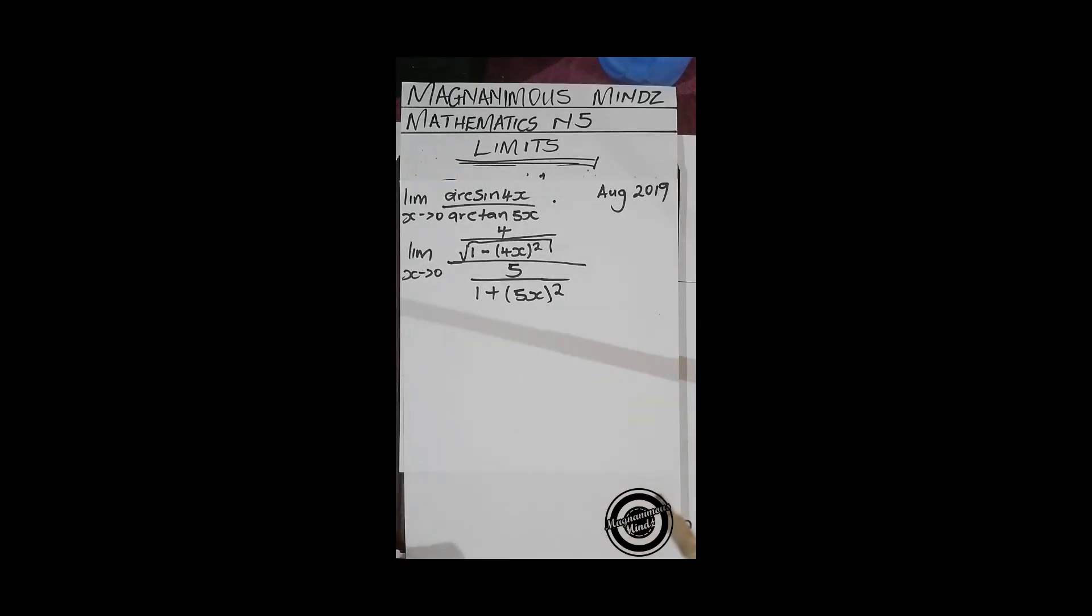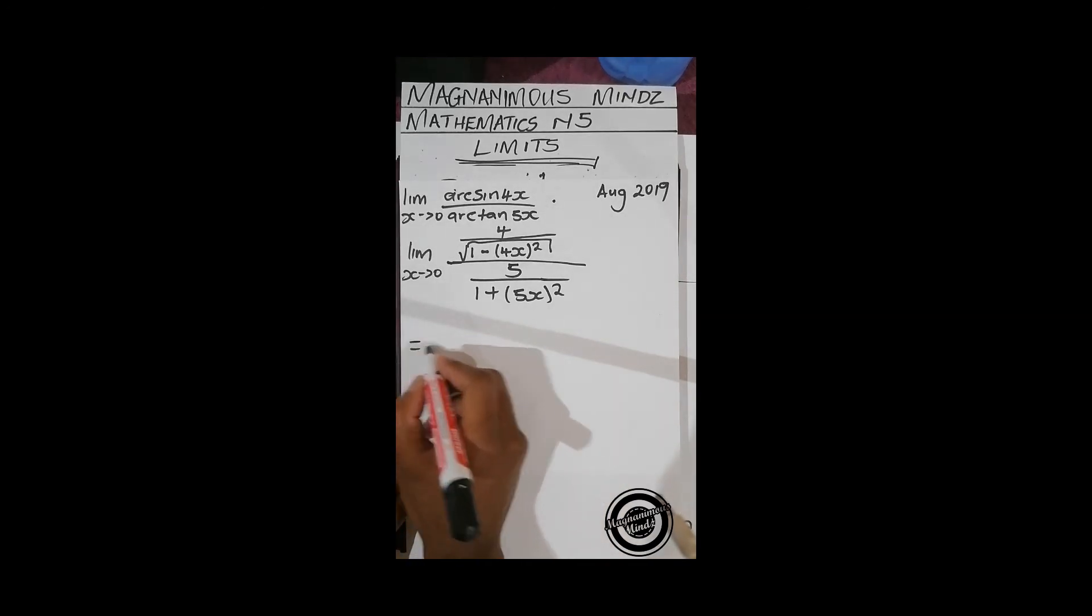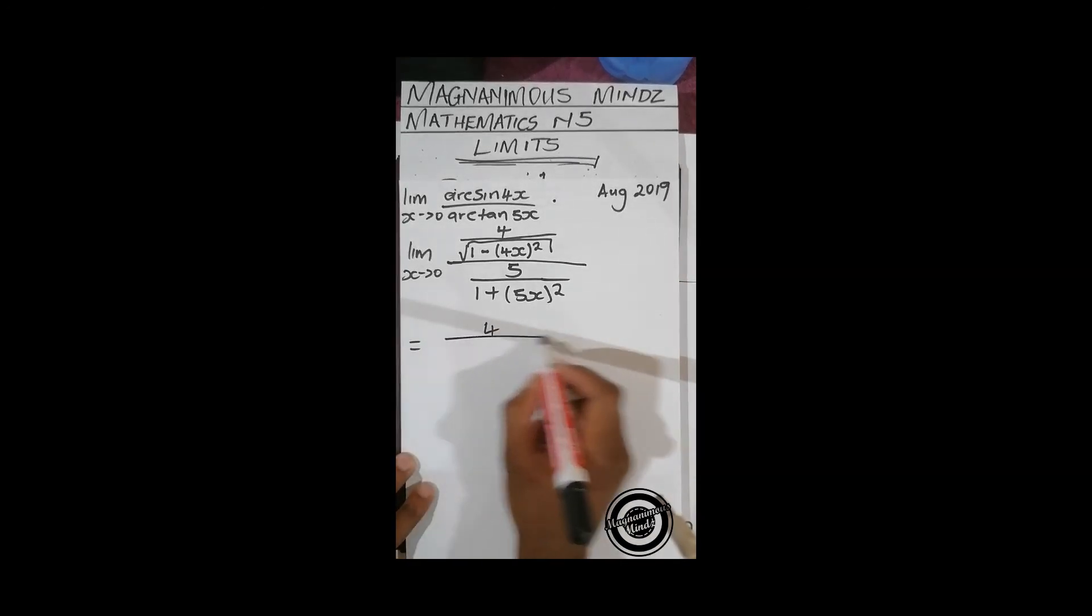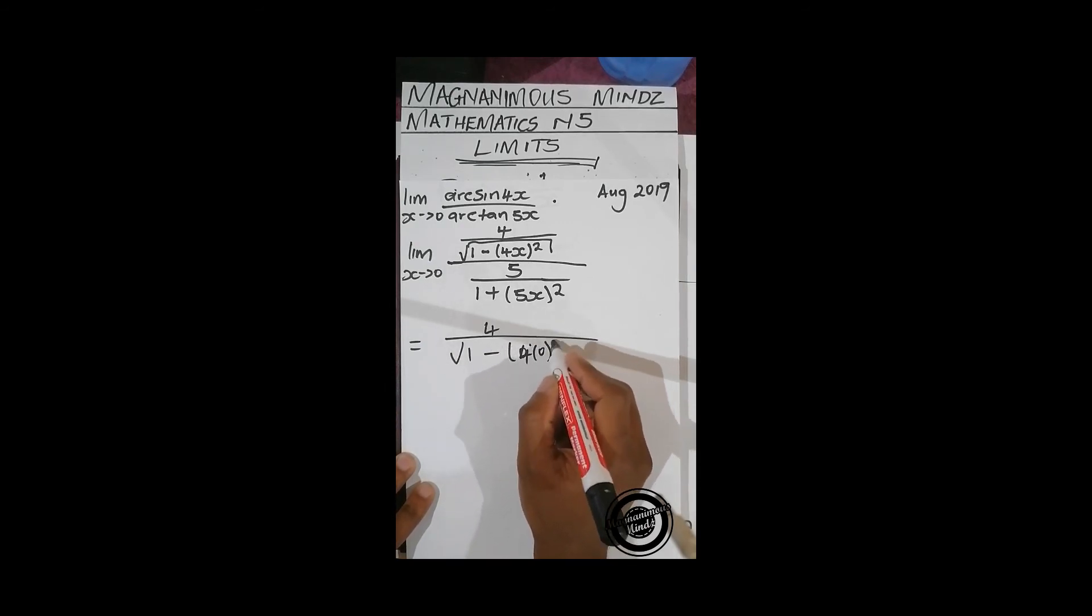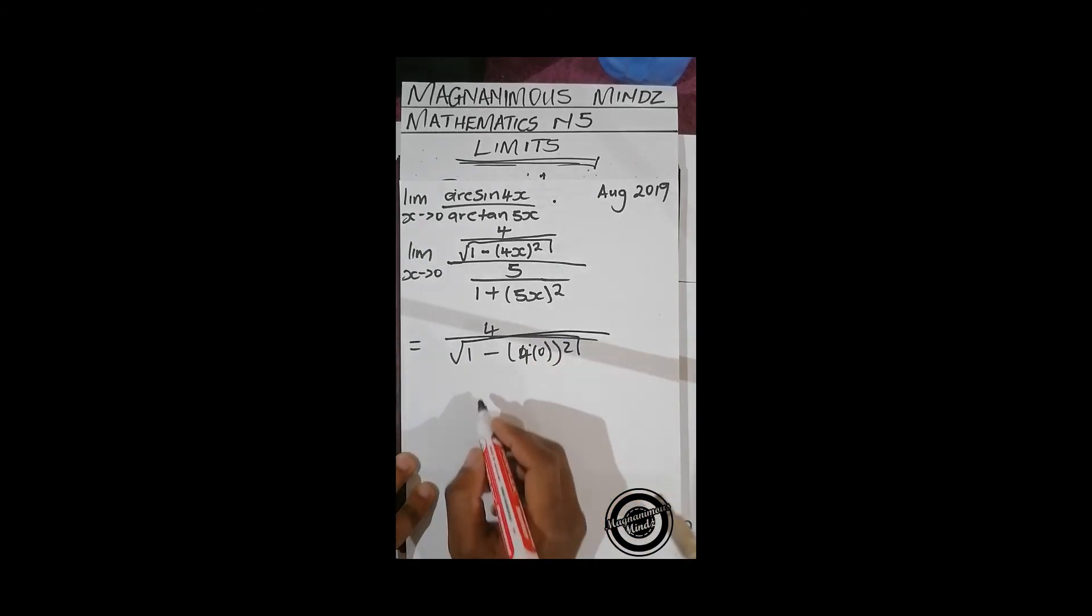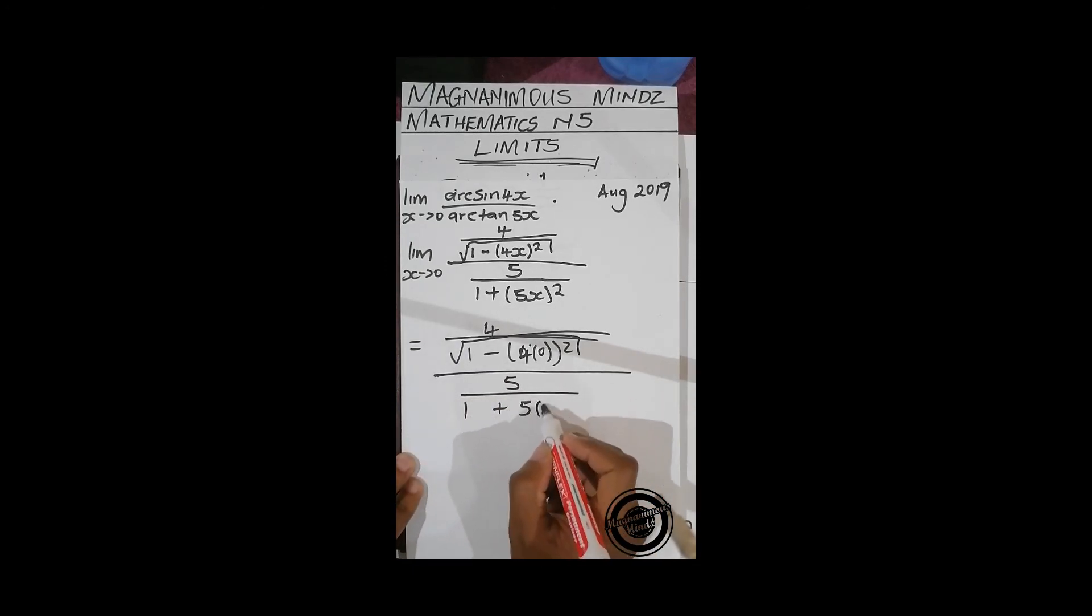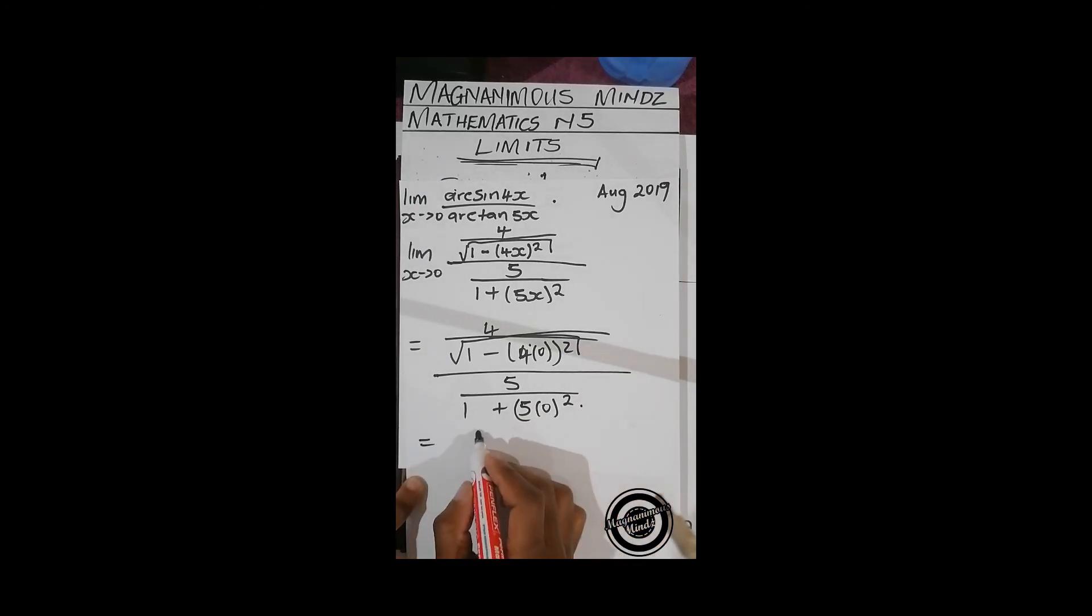From here we can simplify or directly substitute. I choose to directly substitute. If we directly substitute, we're going to have 4 over square root of 1 minus 4 times 0 all squared, all over 5 over 1 plus 5 times 0 all squared. This gives us 4 over square root of 1 minus 0 squared over 5 over 1 plus 0.